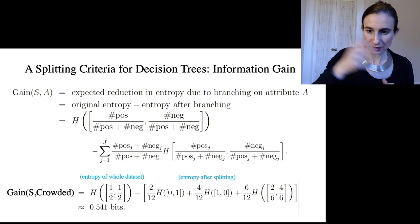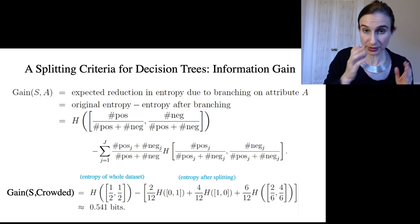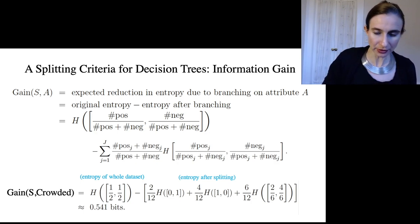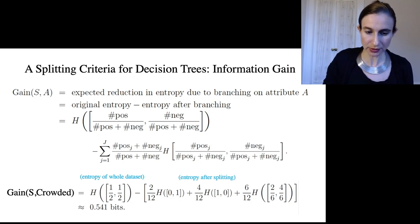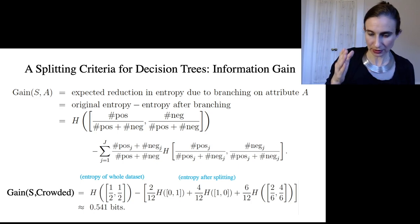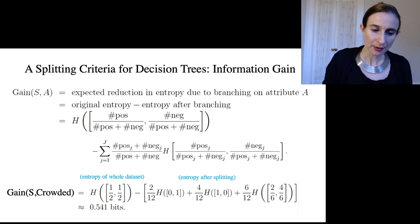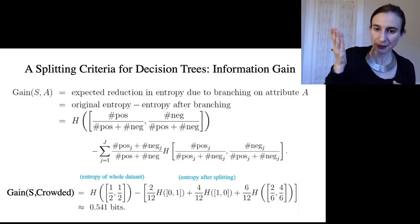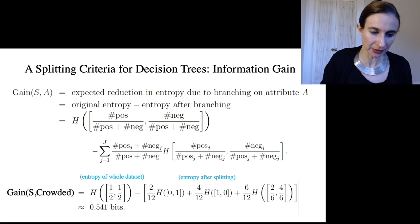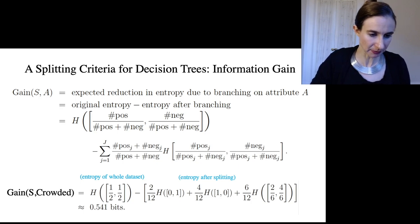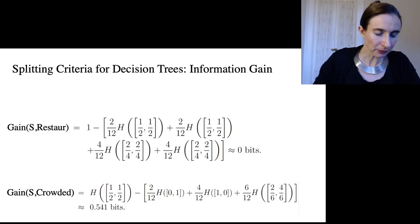And then after we split, I just want to remind you that the first, the leftmost branch was all negative so it's zero and one. And then the middle branch was all positive so it was one and zero. And then the third option was two out of six—so it was two out of six positive and four out of six negative. And then we're weighting each of these by the number of examples that fell into each of the leaves, so that was two, four, and six. So that's where those numbers come from and then we compute it and we get 0.541 bits.